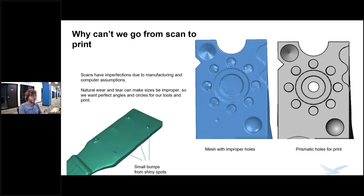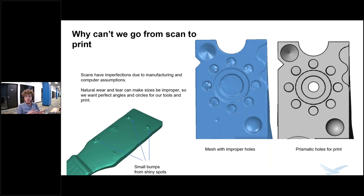I want to talk about why we really can't go from a scan right to a print. A lot of times this is a pretty common question: can I 3D scan something and then send it to my printer? Yes, you actually can — it's totally possible because you are working with a mesh. However, this can be an issue if you're trying to 3D print a mechanical part, because scanners will make a little bit of computer assumptions, and most of our parts have wear and tear. For example, I have this guitar fretboard on the bottom, and spots that had shiny areas are adding little bumps. If we were to send this right from a scan to a print, we would have these tiny little bumps, probably not intended to have those in our actual print.